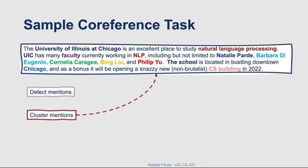Next, we cluster those mentions into groups. This can be done using a variety of different techniques, and we'll cover this in a bit more detail later in this module. The clusters are indicated by different colors in the sample here, so we see that there's a mention cluster for UIC, there's one for NLP, and then there are a bunch of singletons in their own clusters.